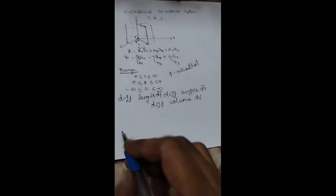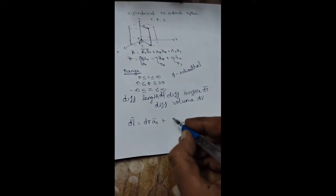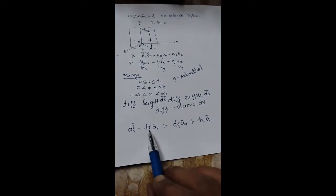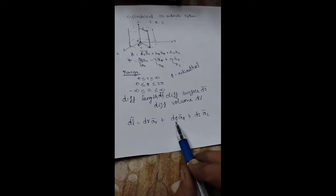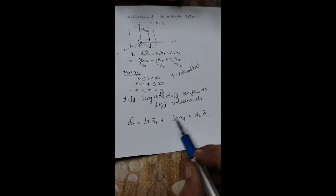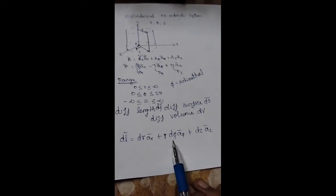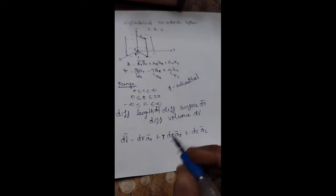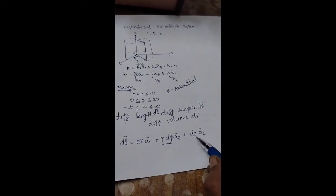Now we are going to see about differential length. dl vector = dr·ar + r·dφ·aφ + dz·az. Here, dr is differential length in the r direction. dφ is a differential angle — to convert it into differential length you must multiply by the radius r, so r·dφ is the differential length in the phi direction. dz is the differential length in the z direction.